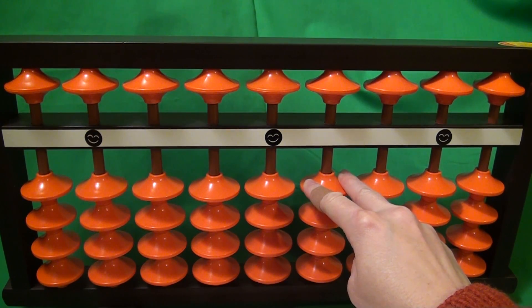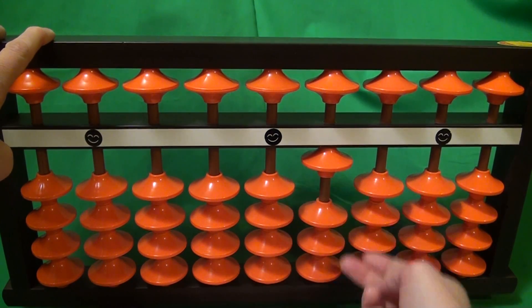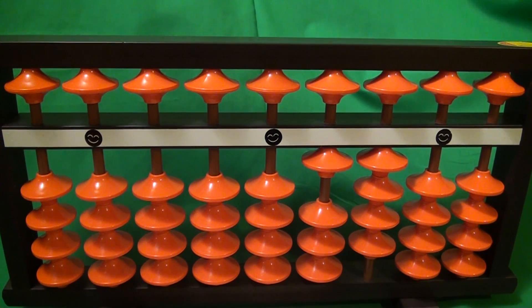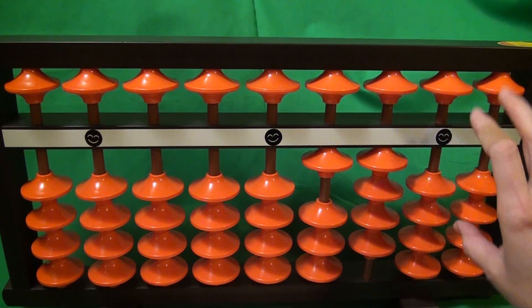We start with 2 times 7. 2 times 7 is 14, so we have a 1 and a 4. And then we have to multiply the 1 times 7. Then we start here. 1 times 7 is 7, so 0, 7.